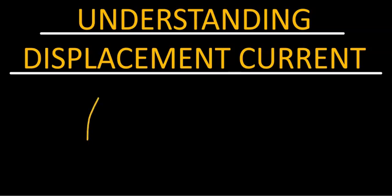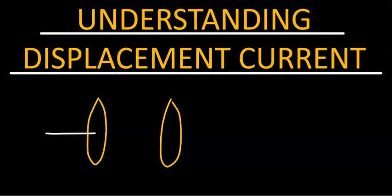In this video, we shall look at the concepts behind displacement current. To discuss this topic, let's consider the process of charging a capacitor. So let's assume you have a parallel plate capacitor like the one shown here. Assume that this capacitor is being charged. Basically, you have current going into the first plate and out of the second plate. Let's call this current at that instant Ic — conduction current, Ic.